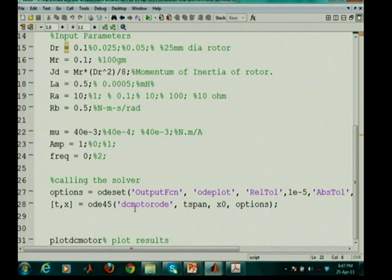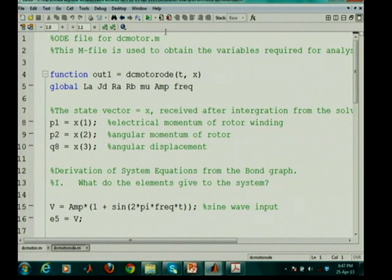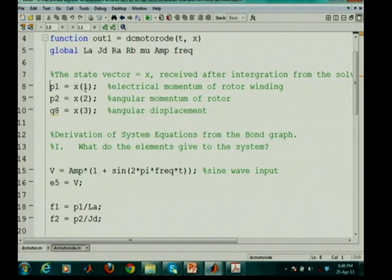So, now our ODE file which we are supposed to get from bond graph is here DC motor ODE. So, we will open this file and here we see that the name of the file and the name of this function are the same. The input format is exactly the same. Input arguments are time and state at the particular value of time. The output is out1. And here you have the order in which the states are provided. So, first state is P1 which is electrical momentum. X2 second state is the angular momentum and the third state has been taken as the angular displacement.